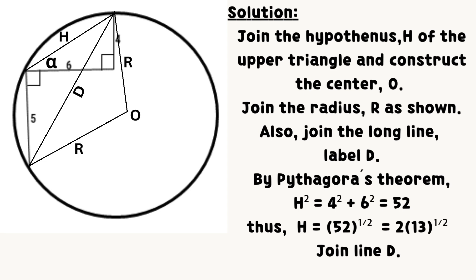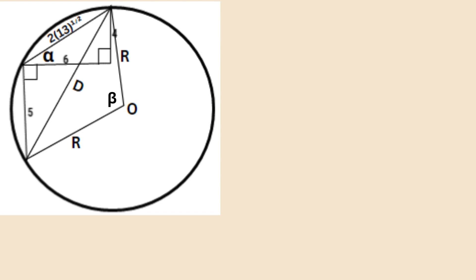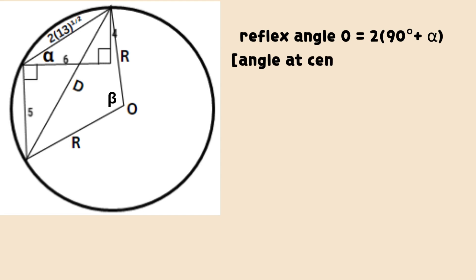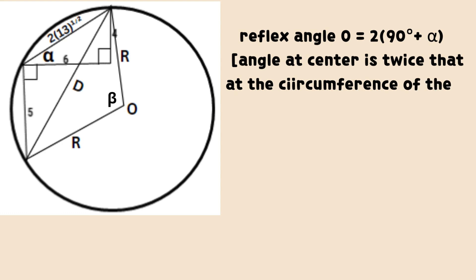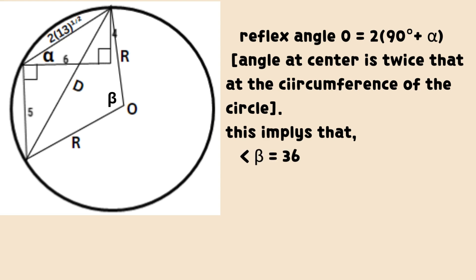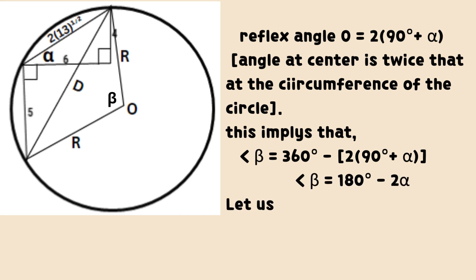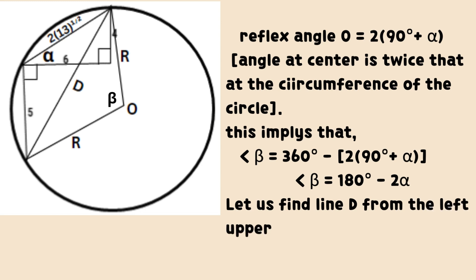Join line D. The reflex angle O equals 2 times the sum of 90 degrees and angle alpha. This is because the angle at the center is twice that at the circumference of the circle. This implies that angle beta equals 180 degrees minus 2 times alpha.